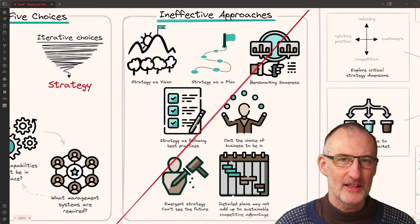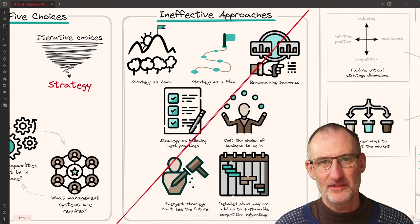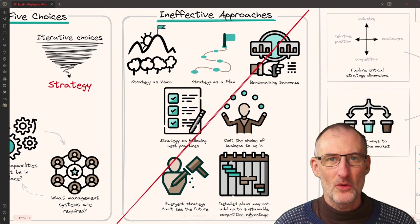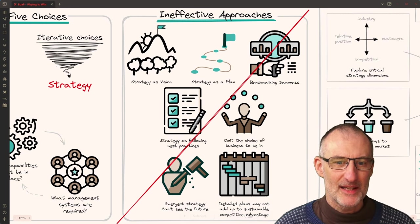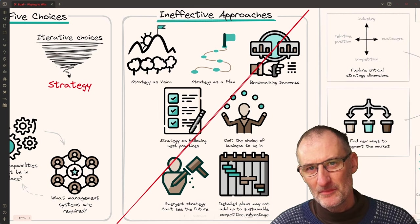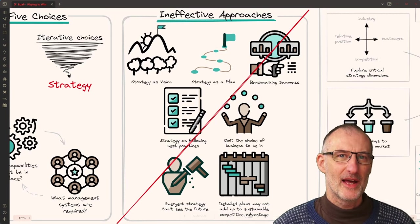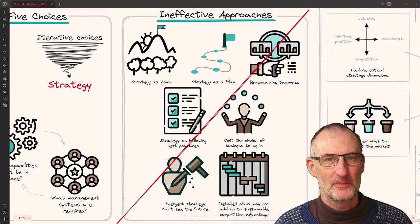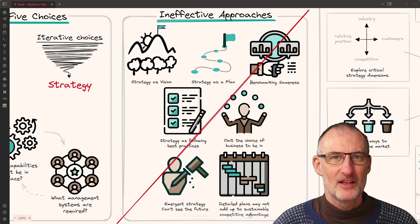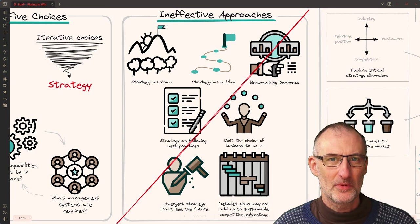Also benchmarking to others and trying to imitate others in the industry is not a strategy. Sameness is not a strategy as well as following best practices or trying to do everything at the same time. And finally the point that Roger makes is that this idea that the business and the world is changing so fast that we are unable to create a strategy and we are going to have an emergent strategy. He doesn't believe in this. The more uncertain the situation the more you need a strategy because that is going to guide decisions on how you're going to approach your business.